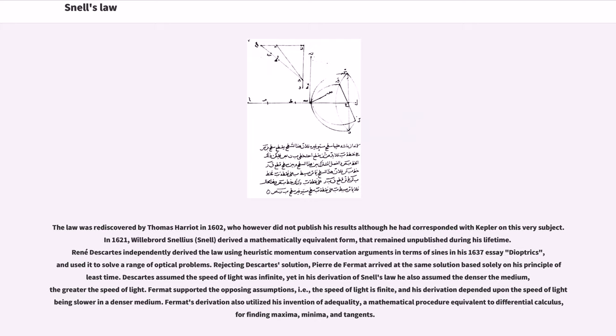In 1621, Willebrord Snellius derived a mathematically equivalent form that remained unpublished during his lifetime. René Descartes independently derived the law using heuristic momentum conservation arguments in terms of sines in his 1637 essay Dioptrique.